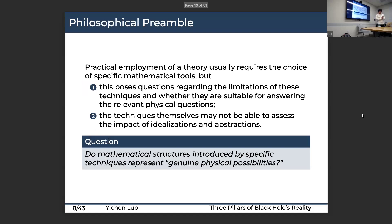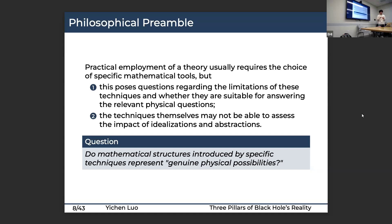For the philosophical preamble: under the practical employment of a theory for prediction or explanation, one already requires the choice of specific mathematical tools. Those choices pose questions regarding the limitations of these techniques and whether they are suitable for answering the relevant physical questions. The techniques themselves may not be able to assess the impact of idealizations and abstractions. The general question is: do the mathematical structures introduced by specific techniques represent genuine physical possibilities?